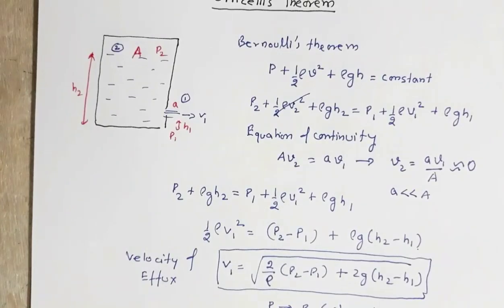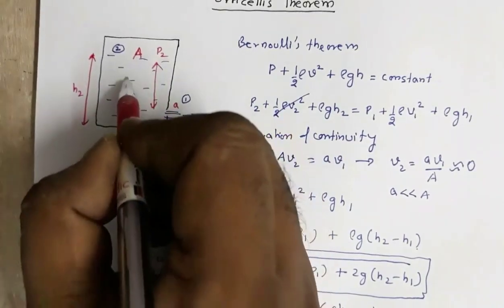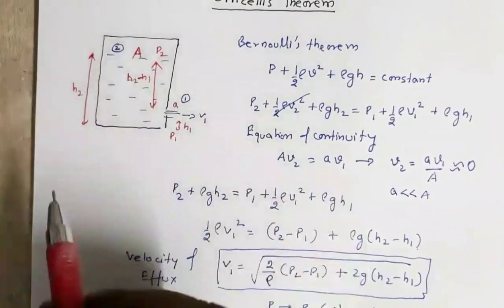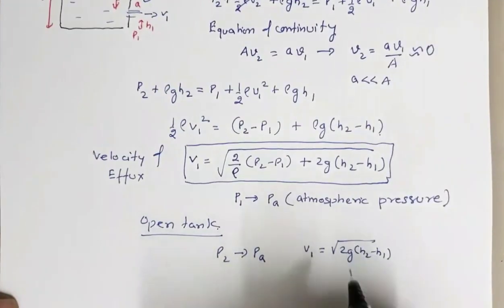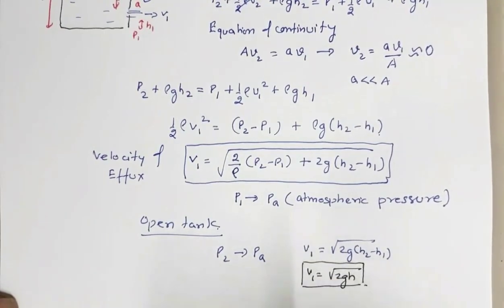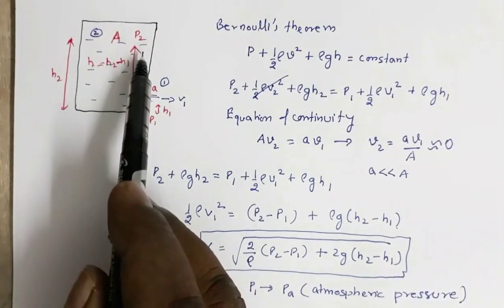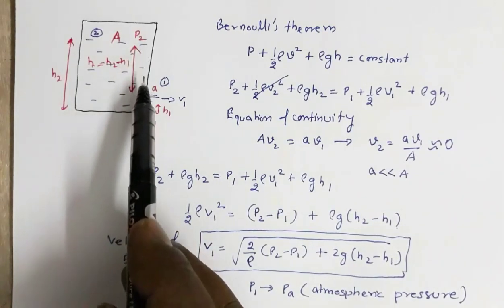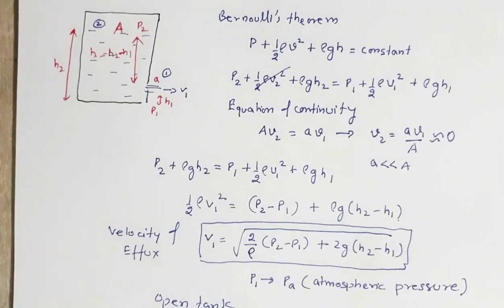Here h2 is the height of the top surface and h1 is the height of the opening, so h2 minus h1 is the height of the top surface above the opening. If we call this small h, then v1 equals the square root of 2gh — the same as the free-fall velocity of an object falling through height h.